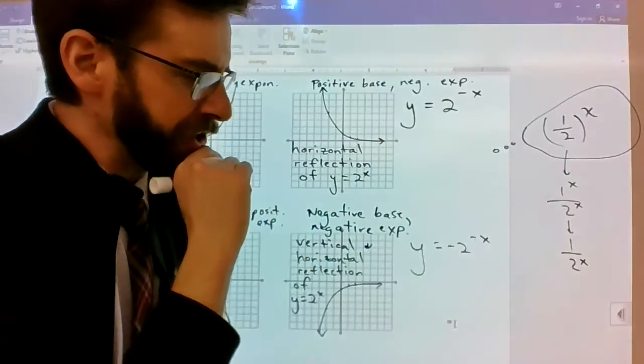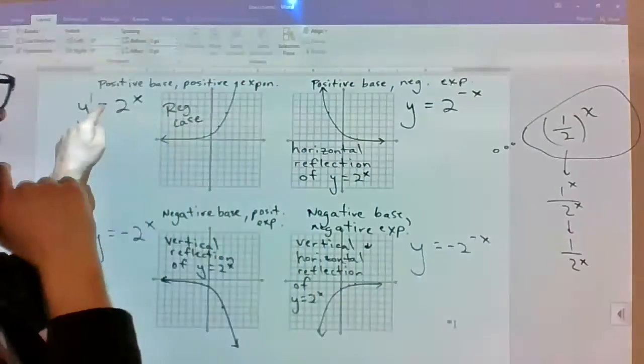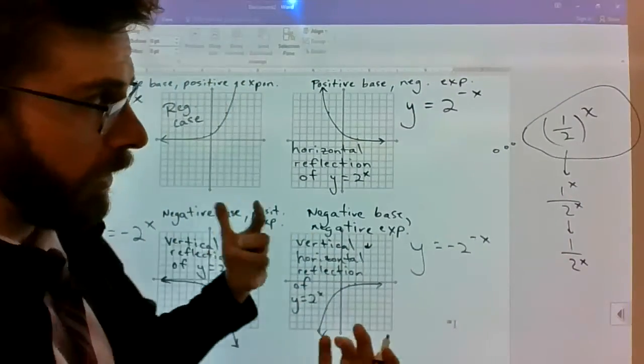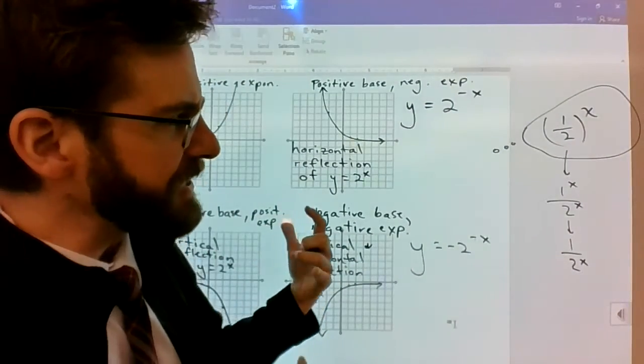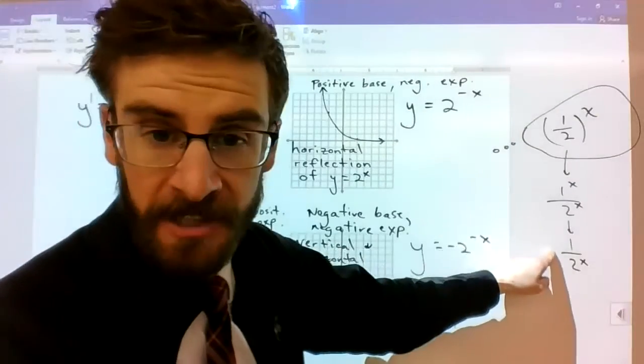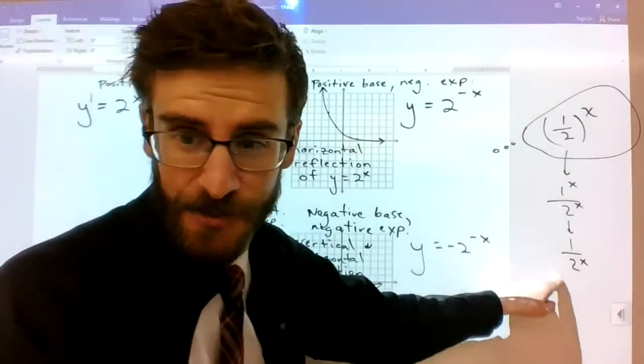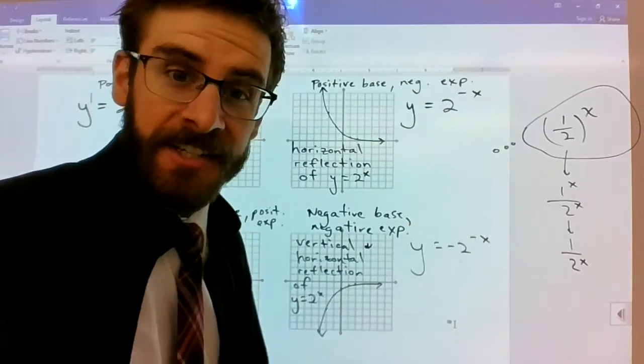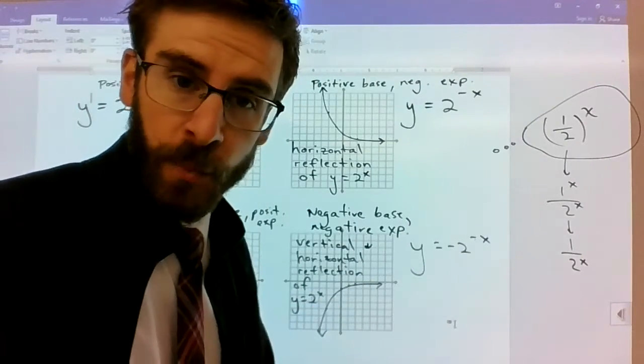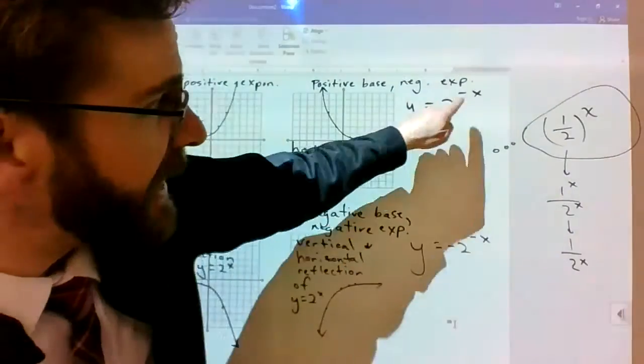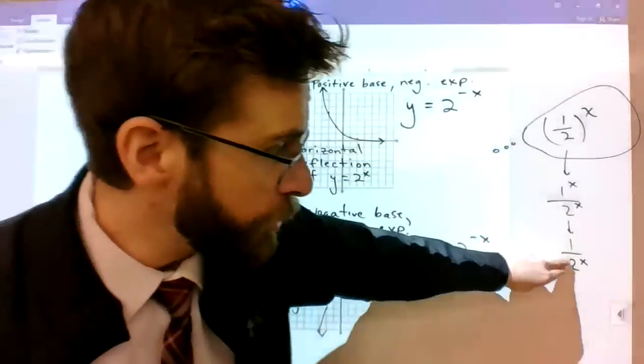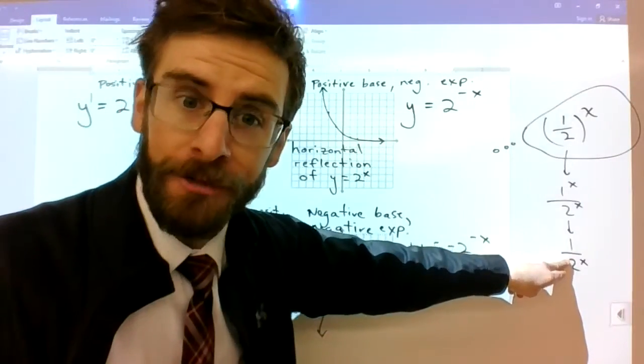So now the question is which of these would manifest itself or which one of these would basically create the same table of values as this one?